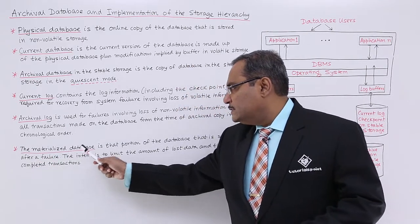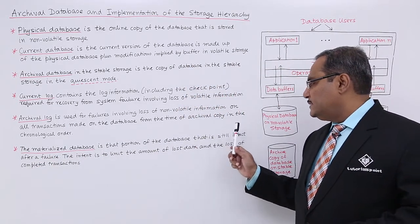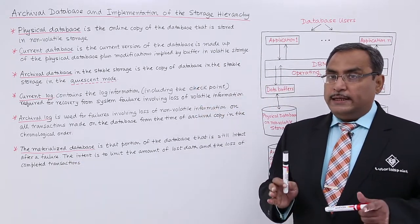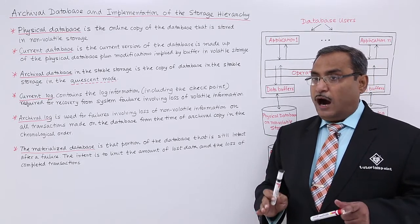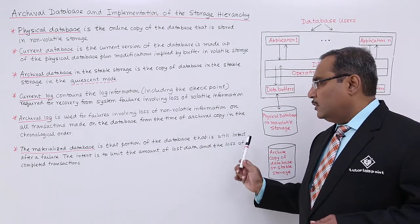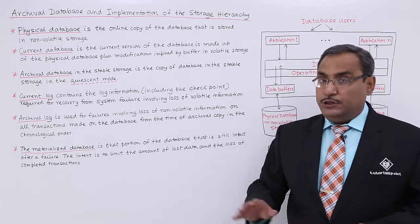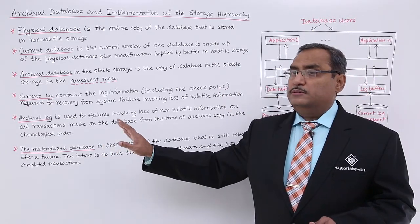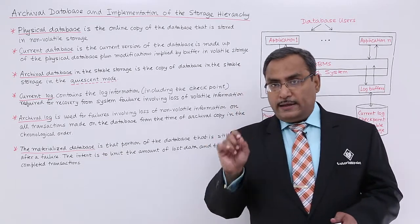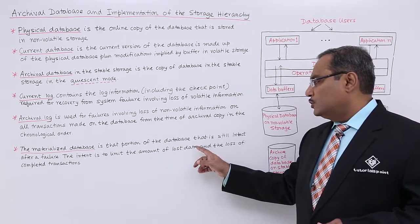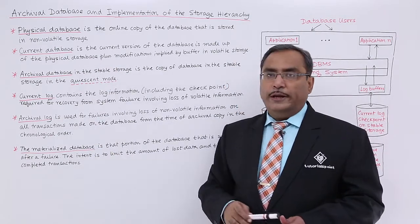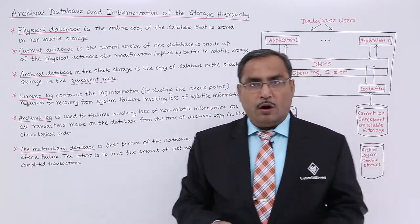The materialized database is that portion of the database that is still intact after a failure — it is the database which remains intact after the failure. The intent is to limit the amount of lost data and the loss of completed transactions. These are the terminologies required for a better understanding of the storage hierarchy diagram.